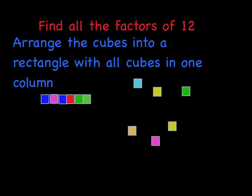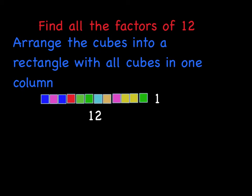Which is going to look like this, where you take all the cubes in that number, and you put them in one row, which we're doing right now. We've got all 12 cubes, putting them in one row. And that gives us our first two factors of 12, which are 12 and 1.